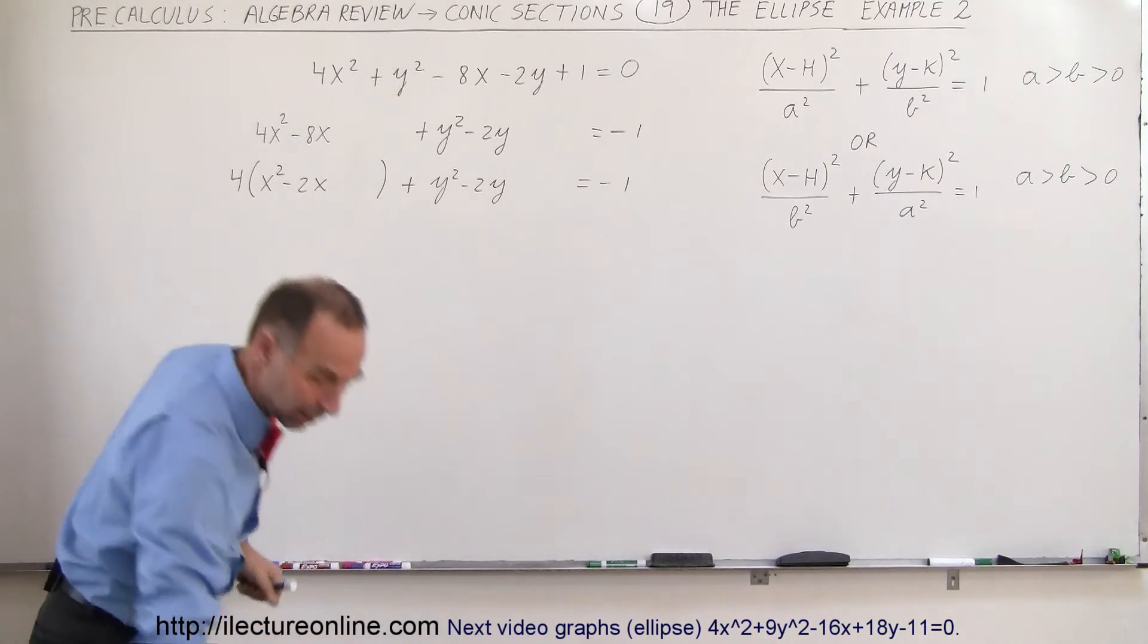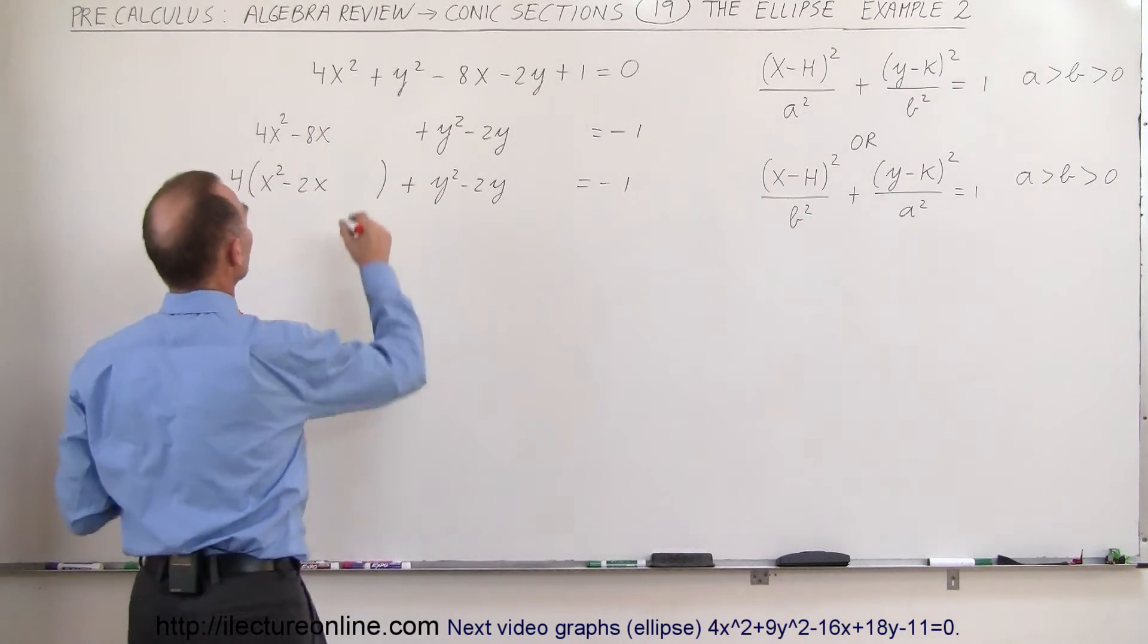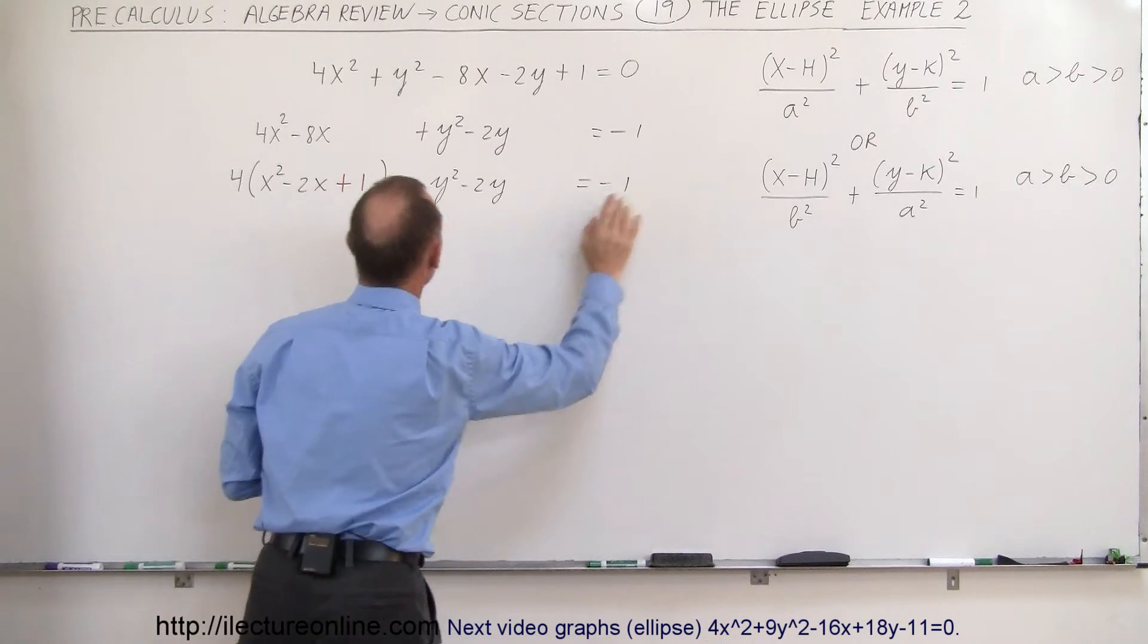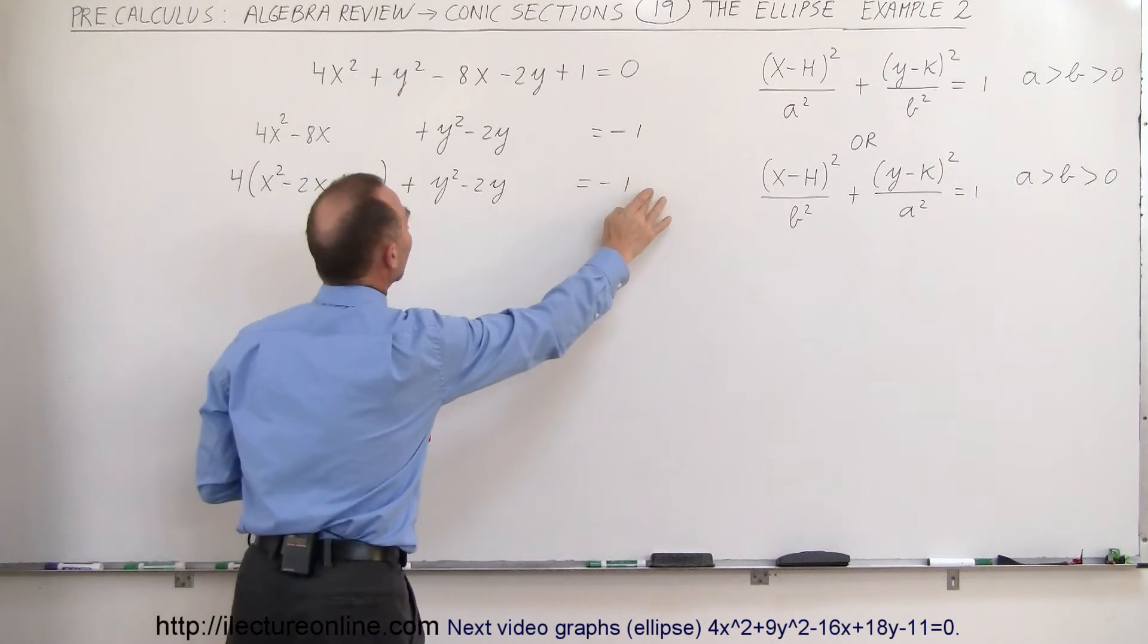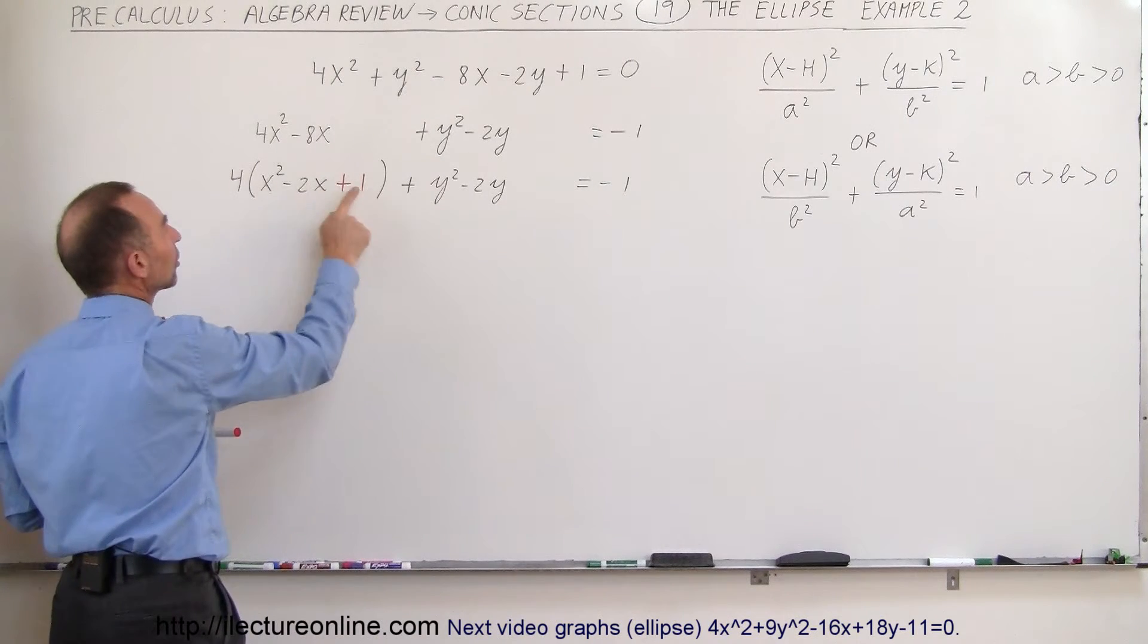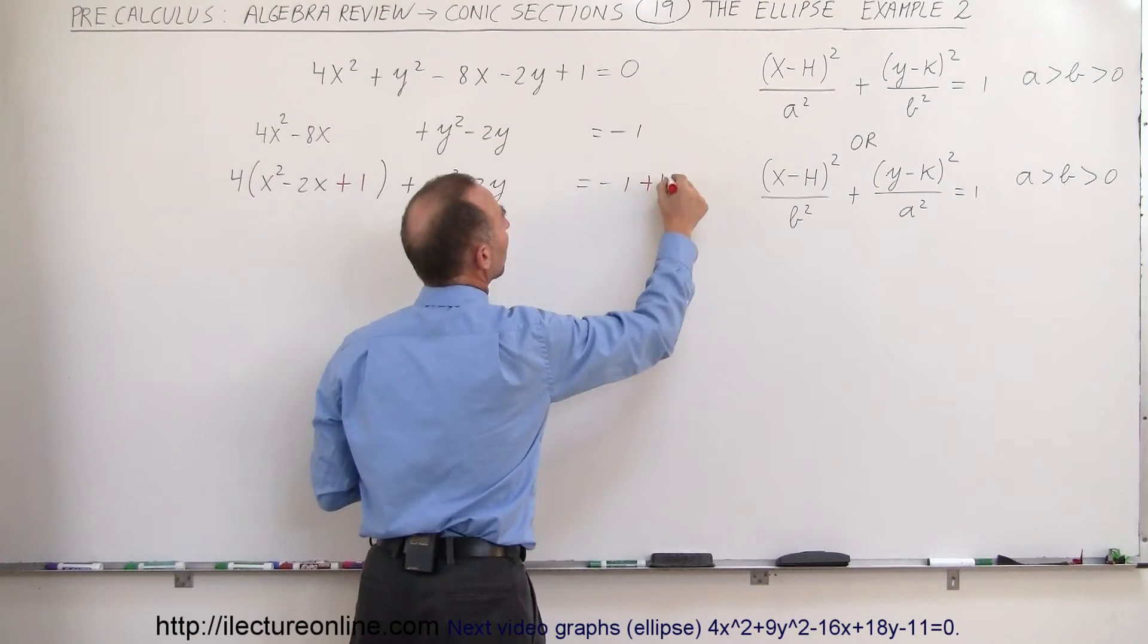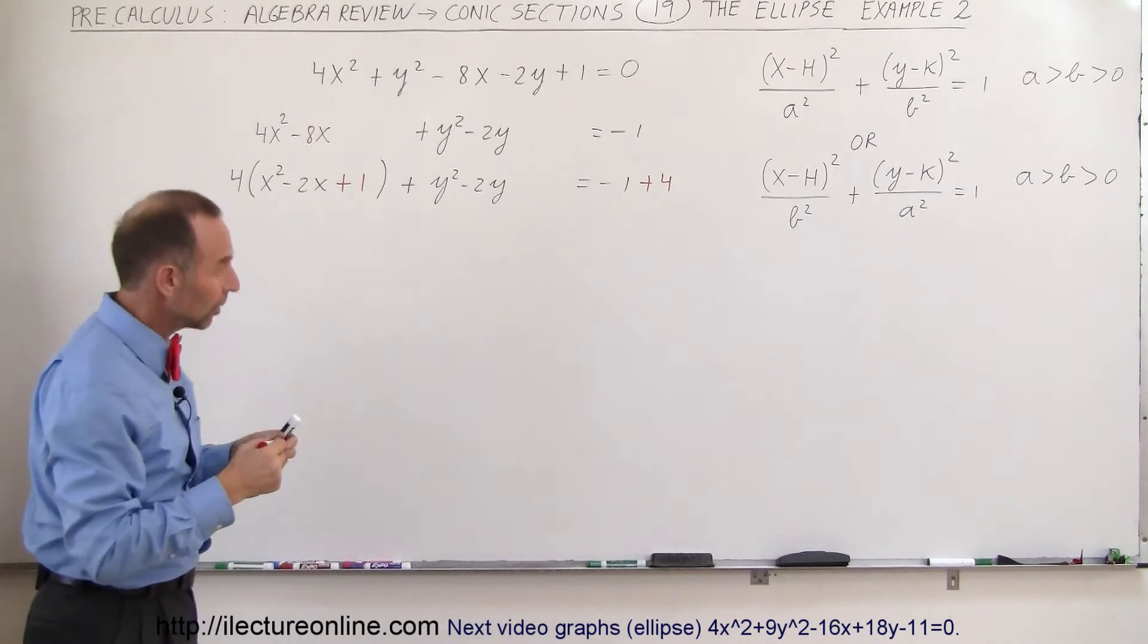Let me go ahead and indicate that in red so it's easier to see. We're going to add plus 1 over here, which means we also need to add something on the right side. We're not going to add a 1 on the right side because notice that this 1 is multiplied by 4, which means we need to add plus 4 on the right side of the equation.